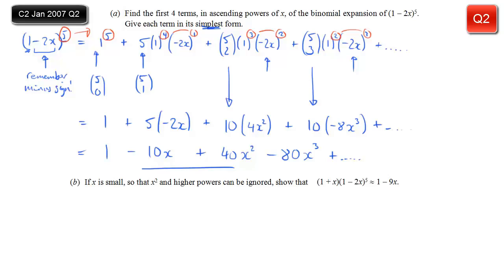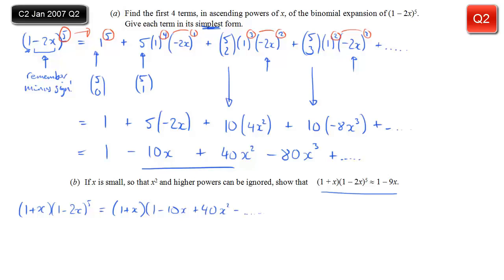In part B, we're told that x is small enough that x² and higher powers can be ignored. We start by looking at the left-hand side, which is (1 + x) multiplied by the expansion we just found. So that equals (1 + x) times our answer to part A: 1 minus 10x plus 40x² minus... and so on, ignoring higher powers of x.